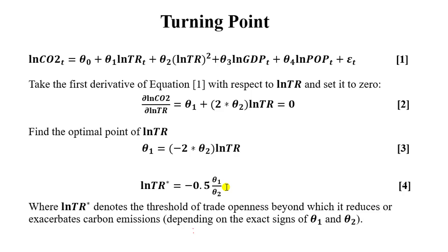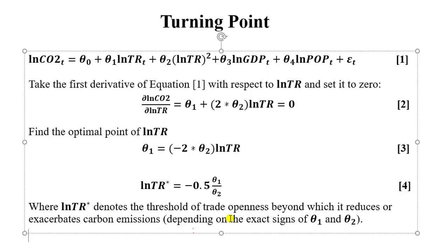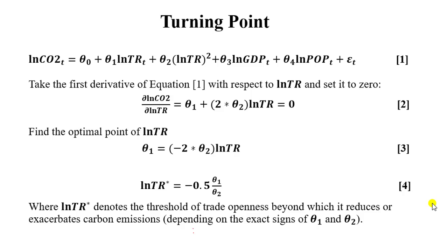If you get your equation correctly, you should have exactly what obtains in equation four. I have a caveat here: I said the log of trade, the optimal value of the log of trade, now denotes the threshold of trade openness beyond which it reduces or exacerbates carbon emissions, depending on the exact signs of theta one and theta two. The exact signs of theta one or theta two tells us the shape of the curve. Always remember that equation four will definitely give you a positive sign. Don't expect to have a negative turning point—it will always be positive, to the best of my knowledge.